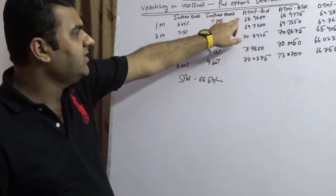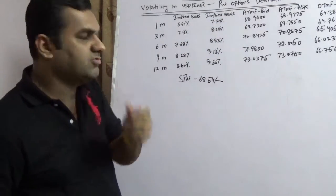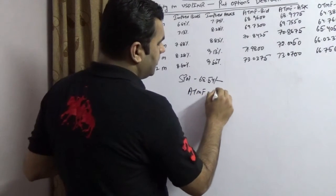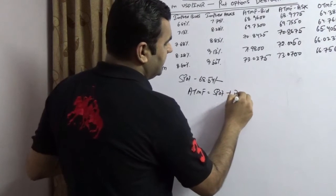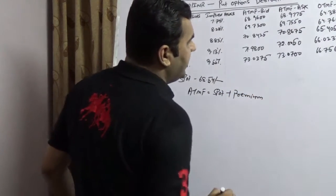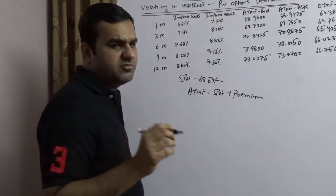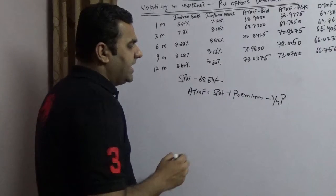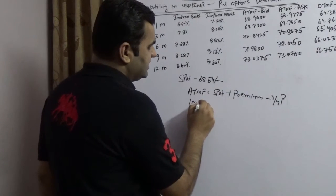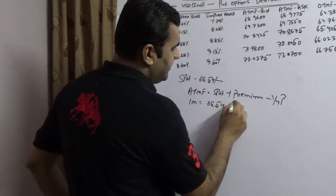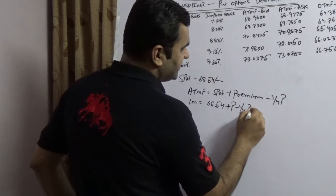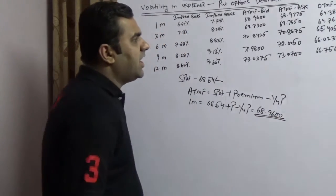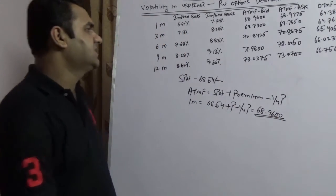At the money forward - we already discussed but let me clarify again - at the money forward is nothing but spot plus premium. And here I assume the charge of one-fourth of a paisa. So this is at the money forward. At the money forward for one month is 68.54 plus the premium minus one-fourth of a paisa, the net stands at 68.96. Now at the money forward bid is this, at the money forward ask is this.